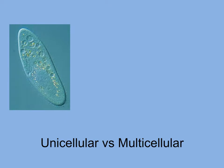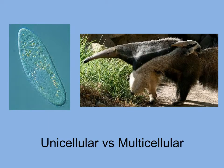An organism may be unicellular, or have one cell, such as a paramecium, or an organism may be multicellular and have many cells, like the anteater. In unicellular life, all processes occur within a single cell — it has structures to metabolize food, to excrete waste, to move, etc. Multicellular organisms have differentiated cells to perform these functions, such as a digestive system or an excretory system.